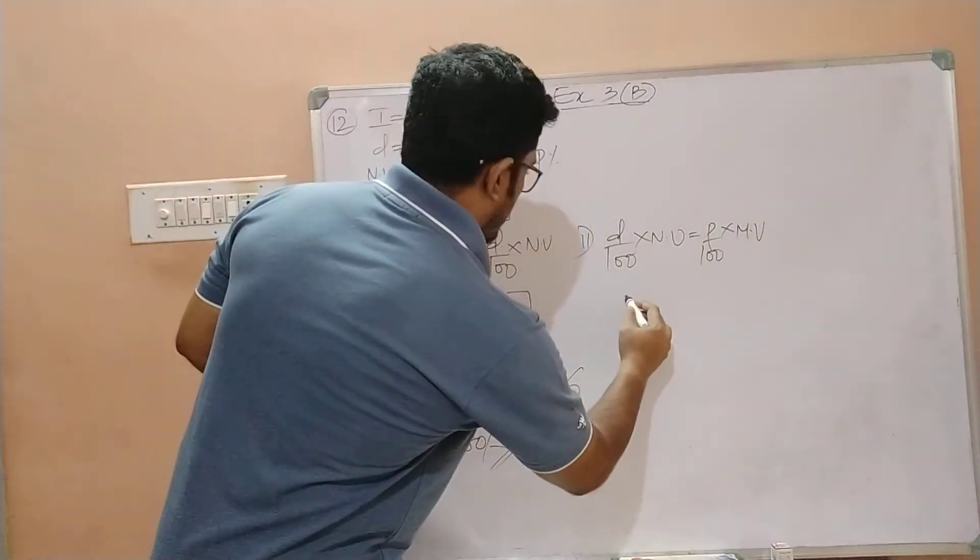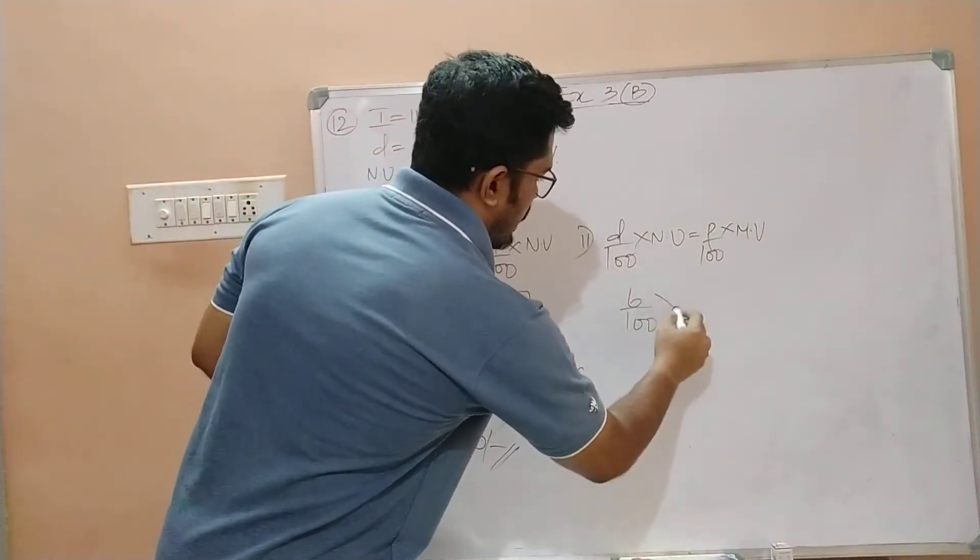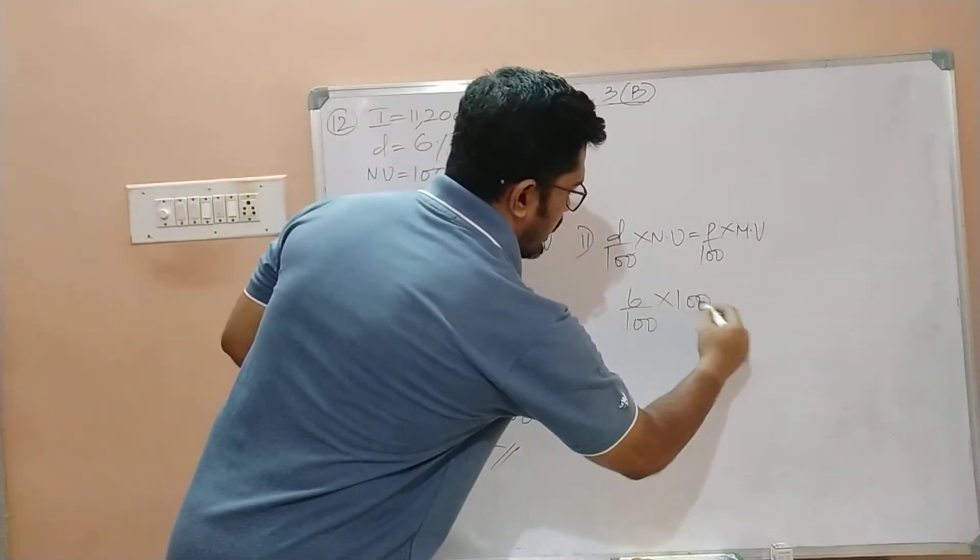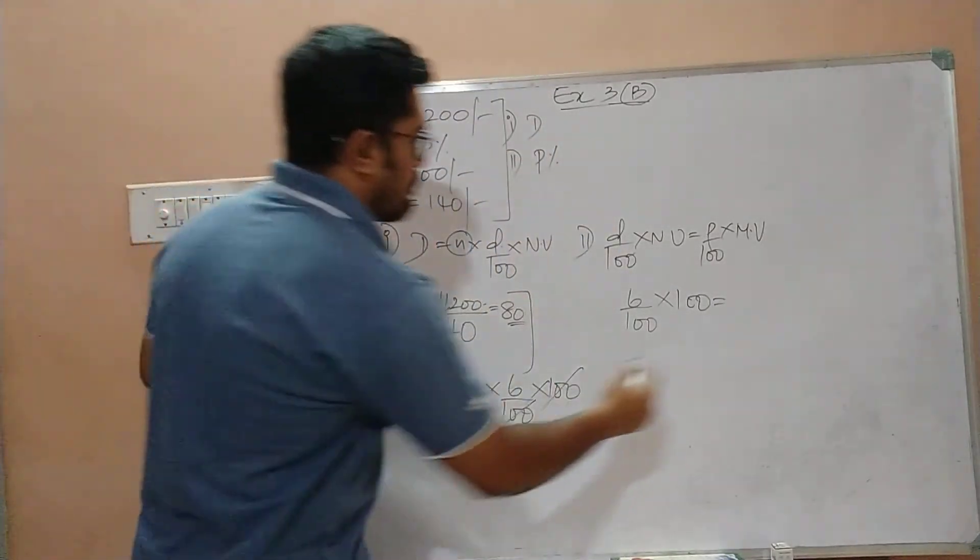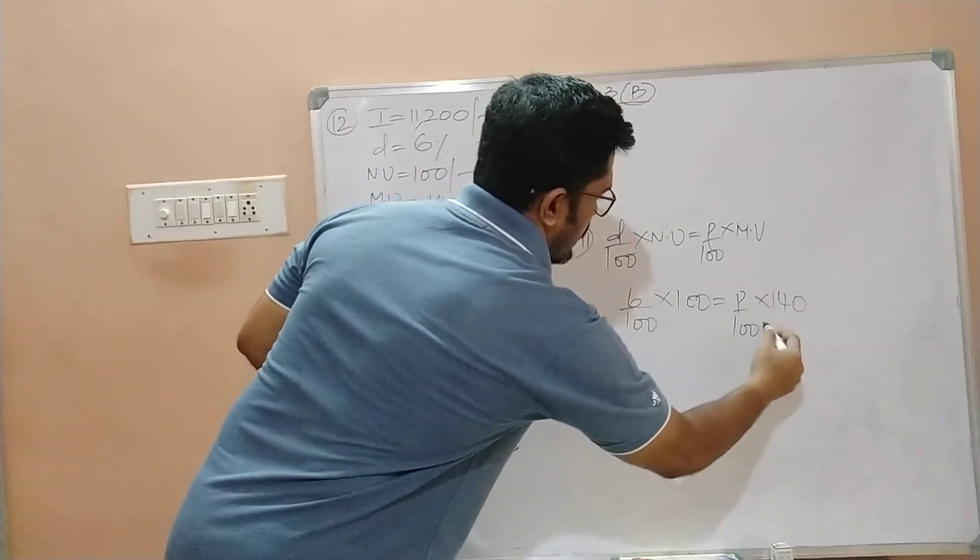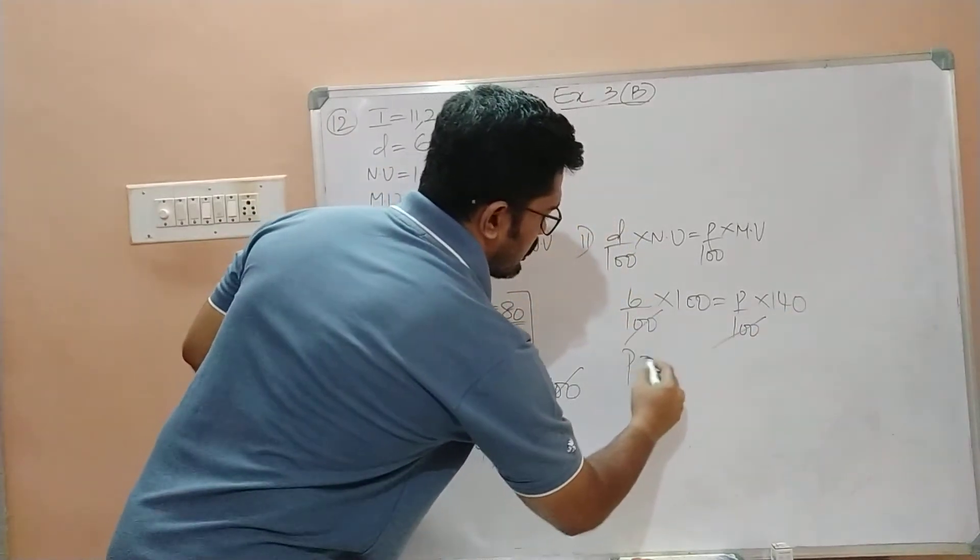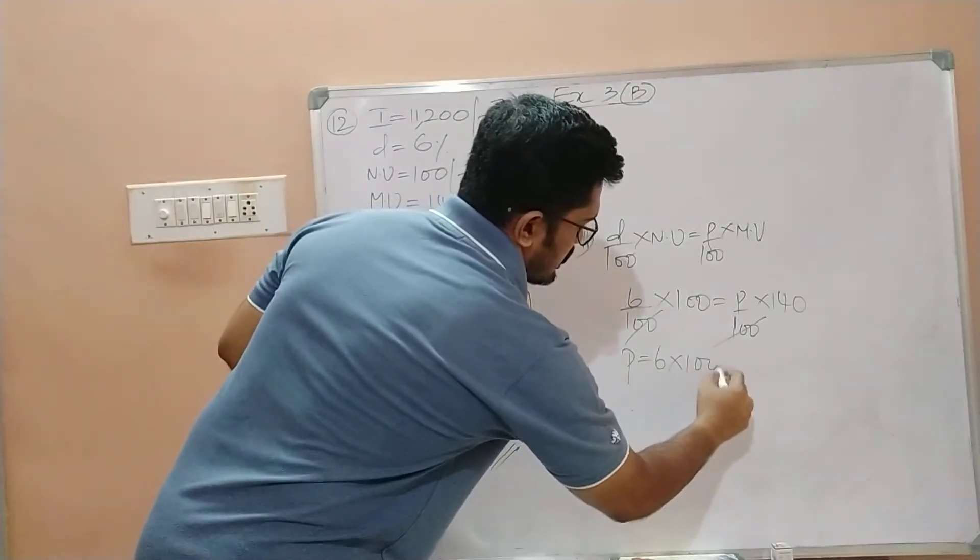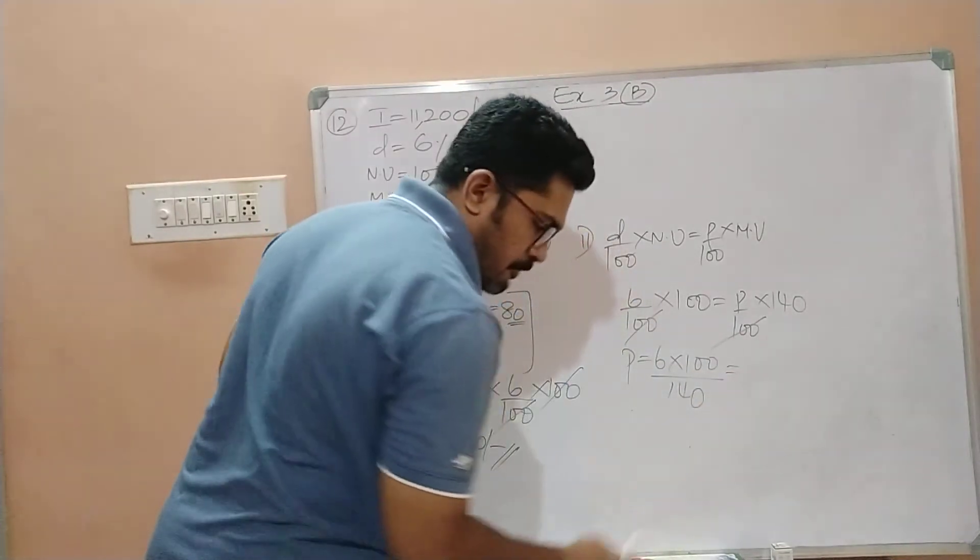D by 100, that will be 6 by 100 into NV is what? 100, which is equal to P by 100 into 140. 100, 100 cancel. So P is equal to 6 into 100 divided by 140.